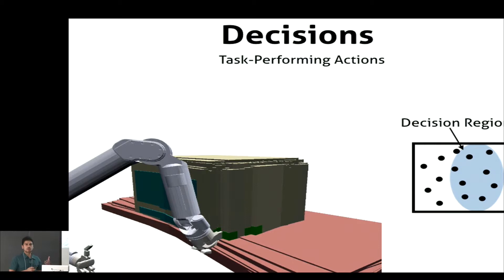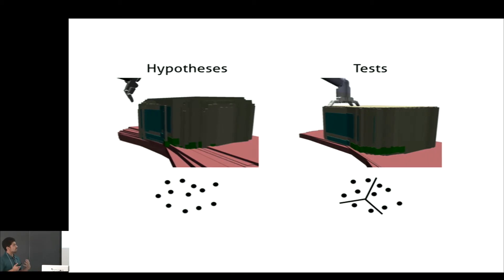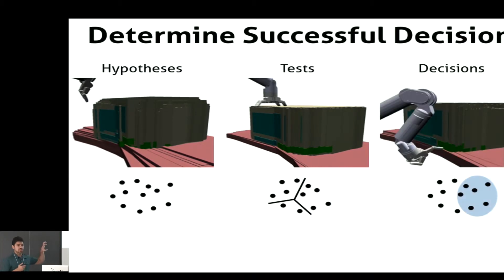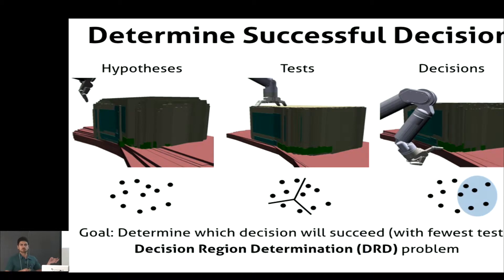Of course you generate many decision regions, so you have many sets of things you can do to try to accomplish your task. The original framework—with hypotheses and tests aimed at determining object location—gets modified so that now we have these different decisions we can take, and our goal is no longer to localize the object completely but just to determine a particular decision that will enable us to succeed. We call this the decision region determination problem, which boils down to pruning your hypotheses until they're all within one of your decision regions.